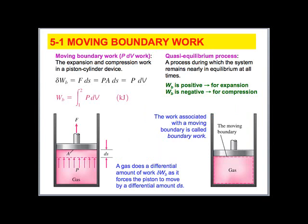One of the key things when we talk about a closed system is boundary work, which you may also hear called PdV work. Work is a path function — that's why it has a delta instead of a d. Work depends on the path taken. Work is defined as force times distance; breaking force into pressure times area, and area times ds equals volume, so the work done by a piston is equivalent to PdV. Integrating from point one to point two gives us our boundary work.